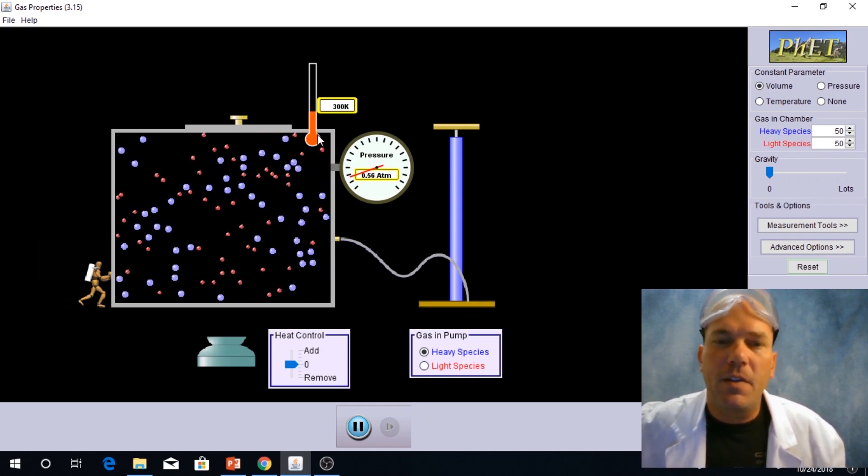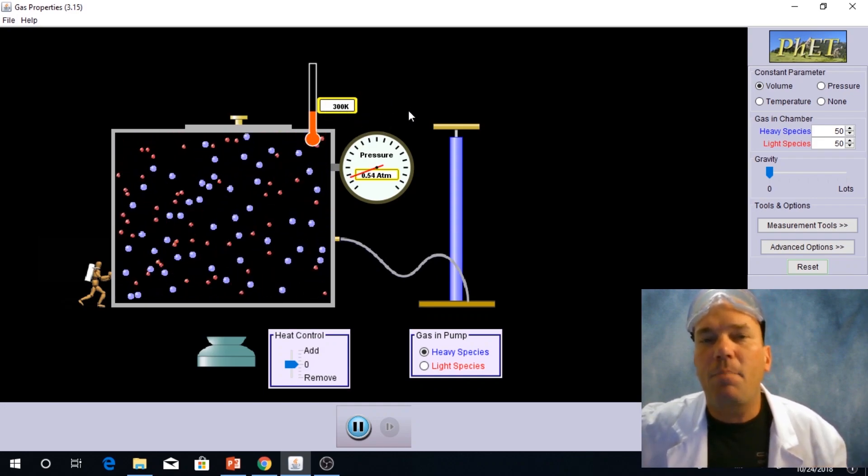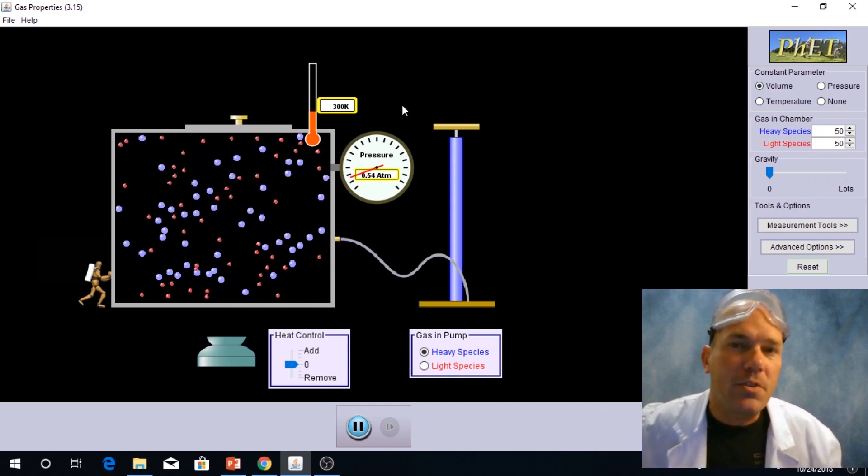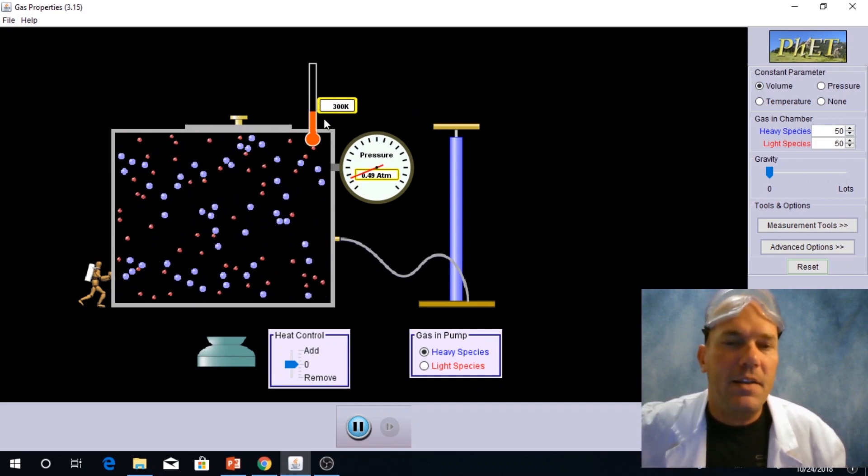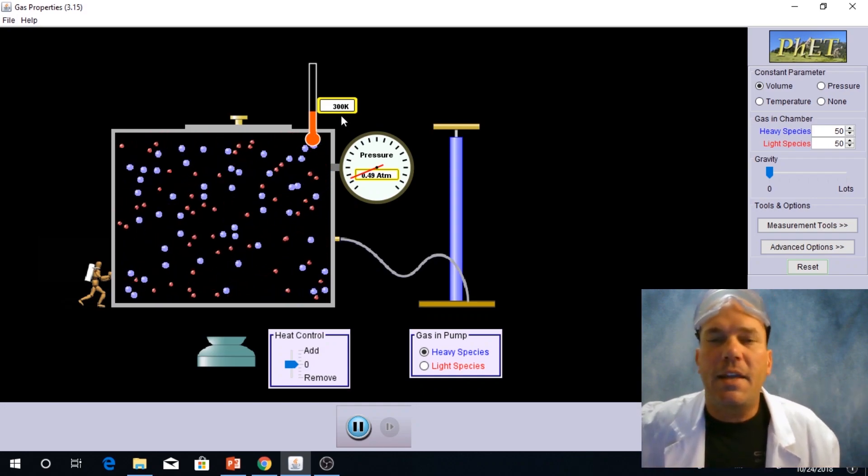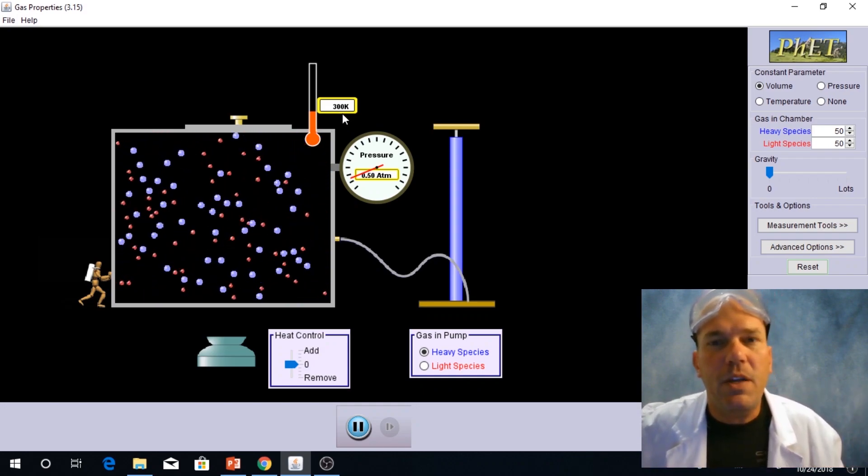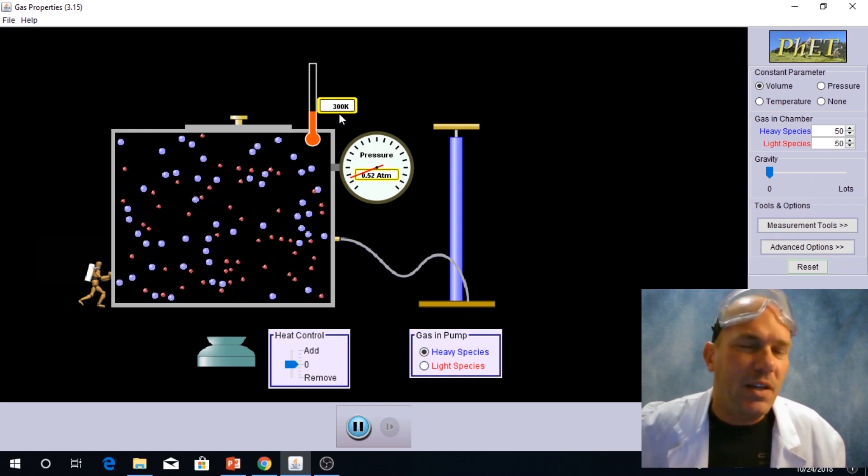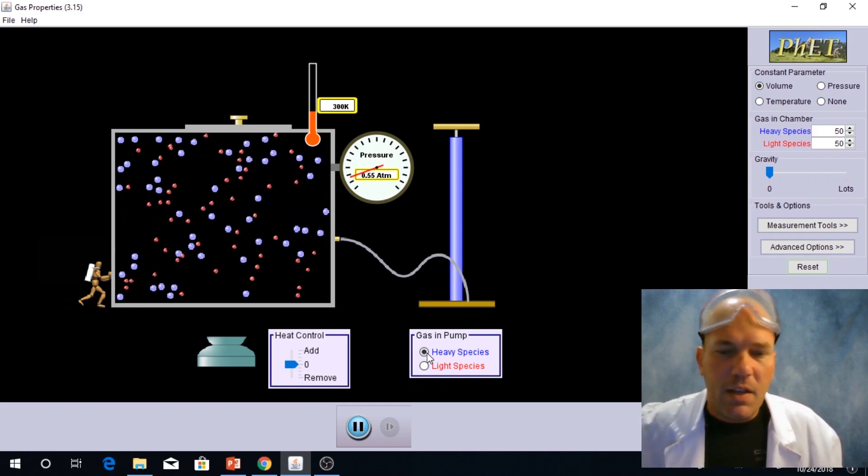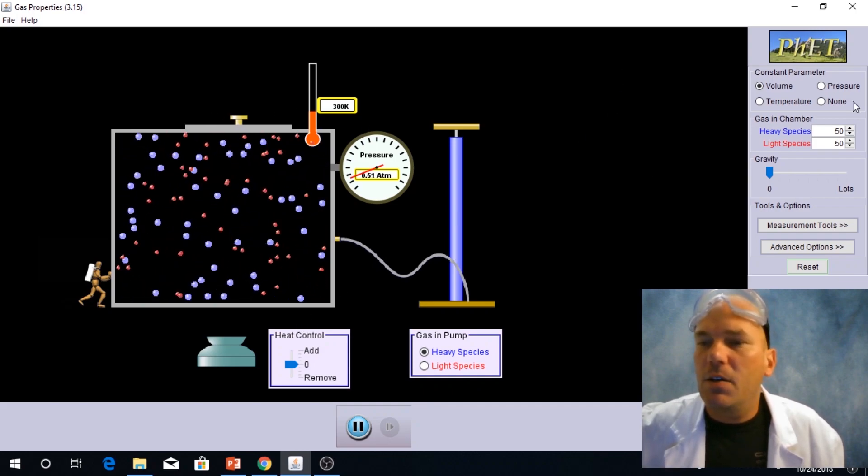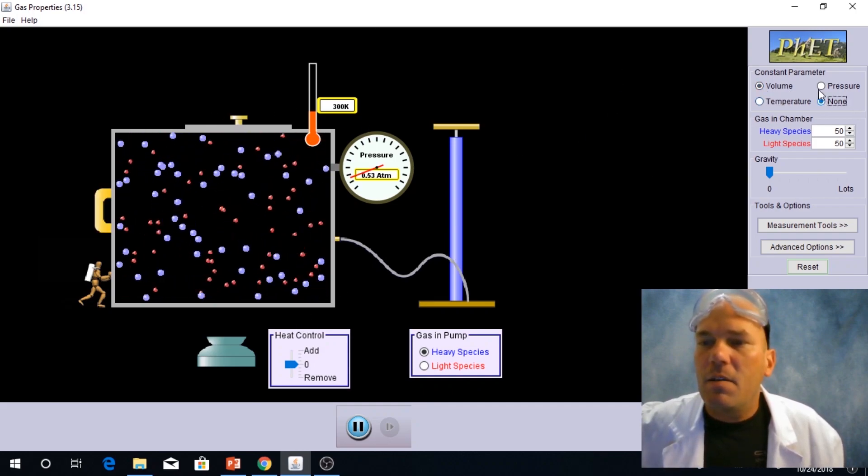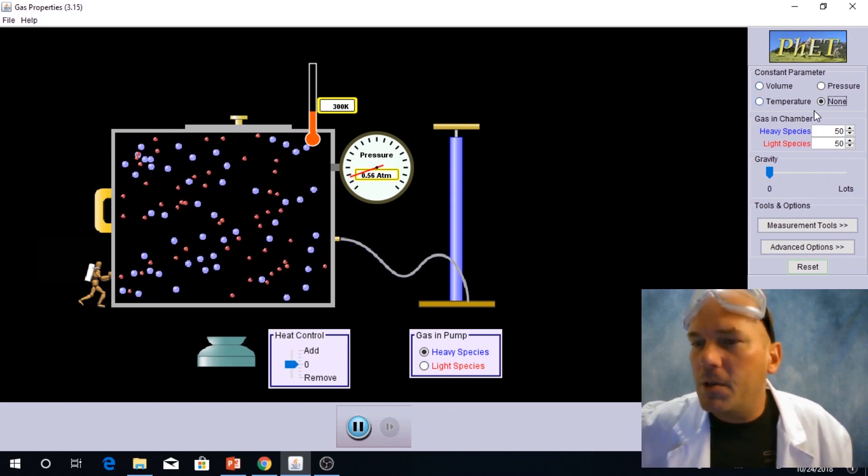Temperature is at 300 Kelvin. Remember, Kelvin is an absolute scale for measuring temperature, and we can find Kelvin by adding 273 to degrees Celsius when needed. Now, I am going to go ahead and put under the constant parameters, none.